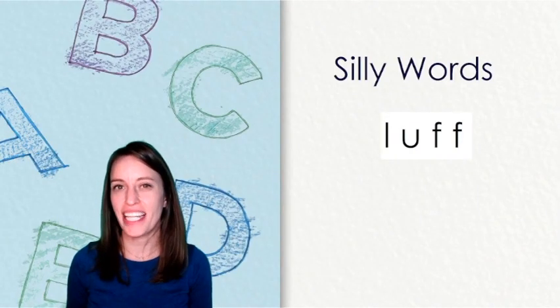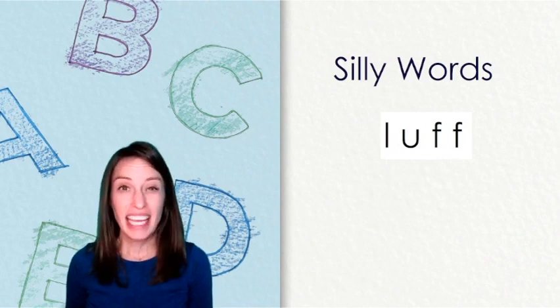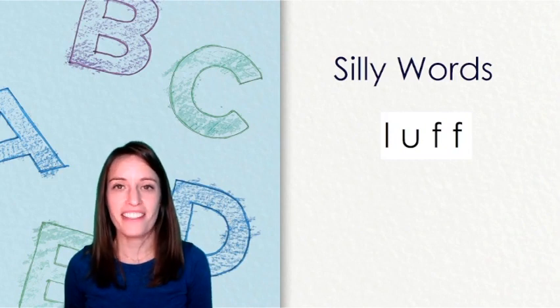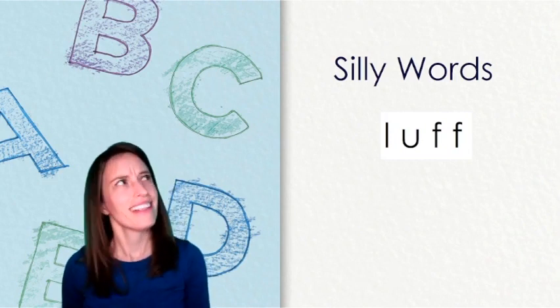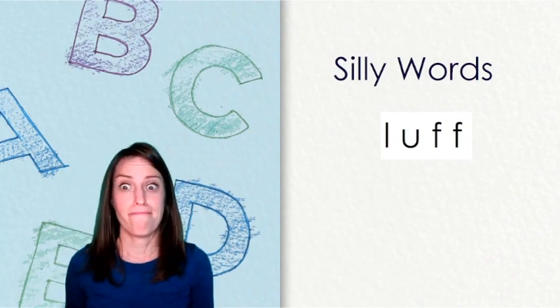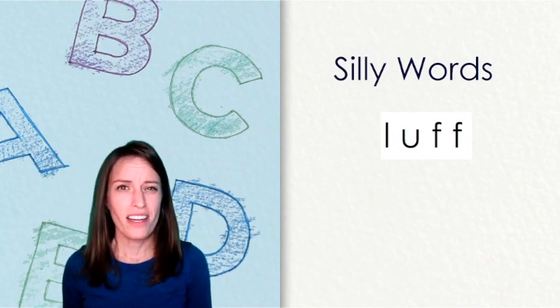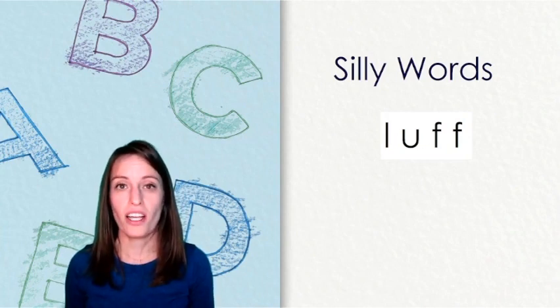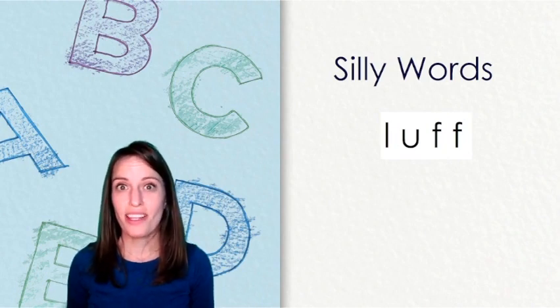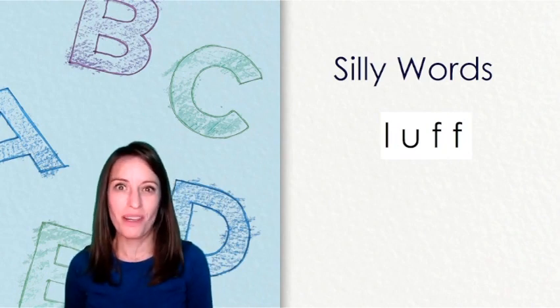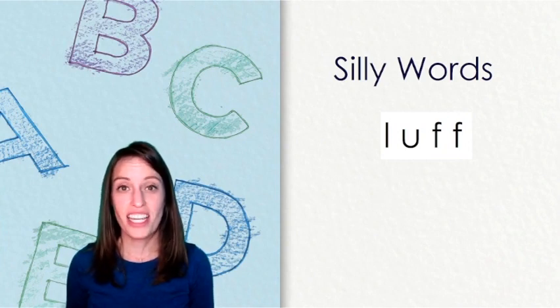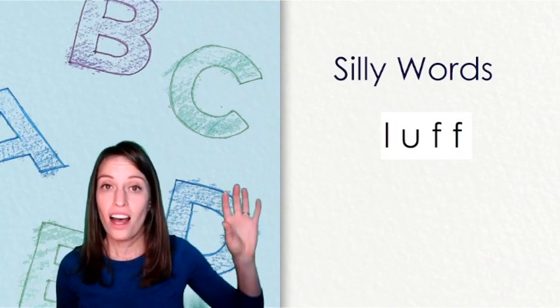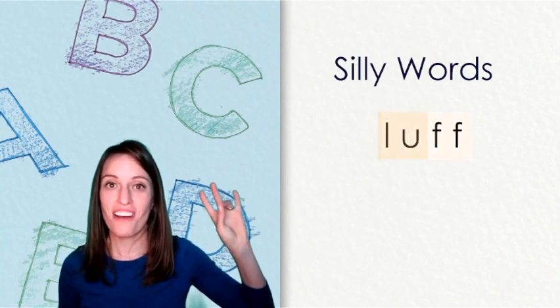It's time to practice reading some silly words. Remember, even if we don't know what the words are, we can use what we know about letters and sounds to decode them. Let's take a look at this silly word. The word is not familiar to me, but I notice that it has the part UFF, just like in the word buff that we worked with in our last lesson. So if I change the B to an L, then I have the word luff.